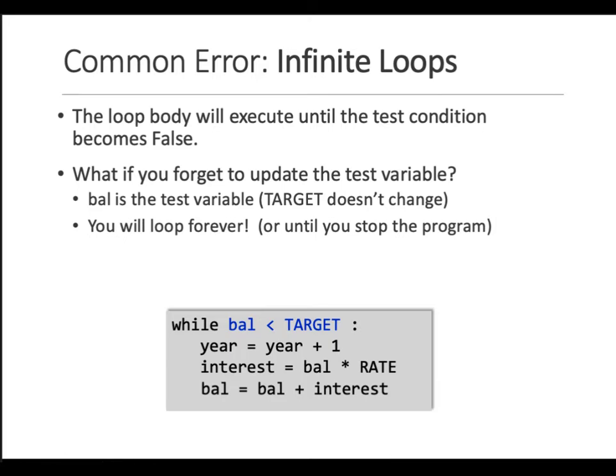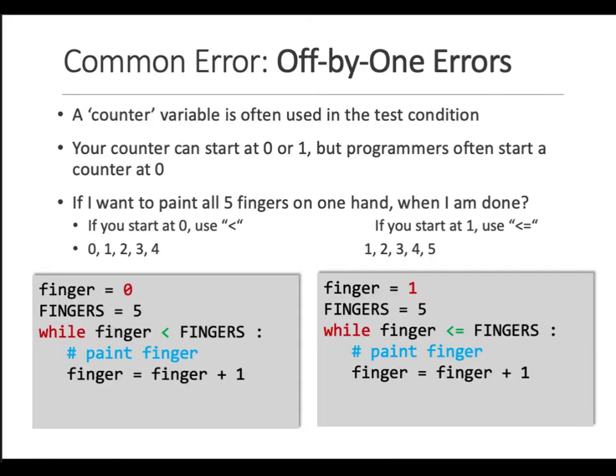Off-by-one errors are when you're testing against one condition whereas it should have been another type of condition. For example, if you start from zero, your finger is zero and you're saying I'm going to paint fingers on one hand.